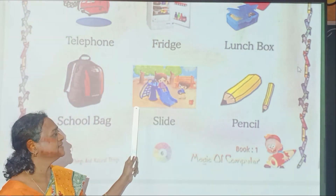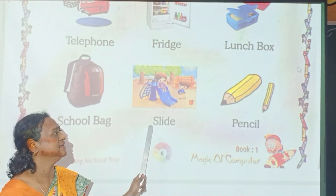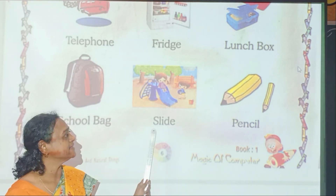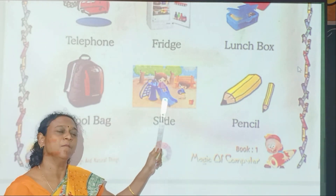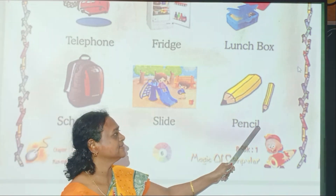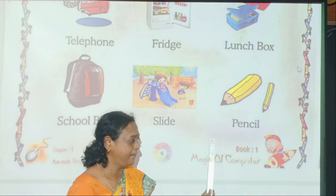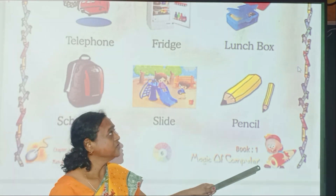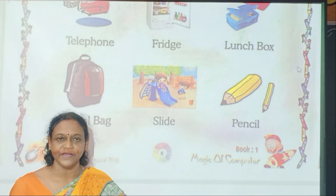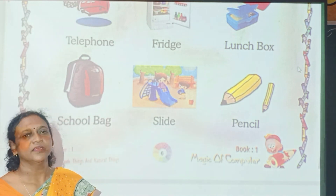What is this? This is a slide. Where do you have it? You see the slide in the park. What is this? This is a pencil. So all these things are man-made things.